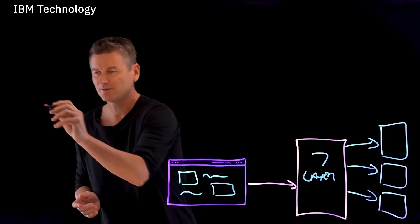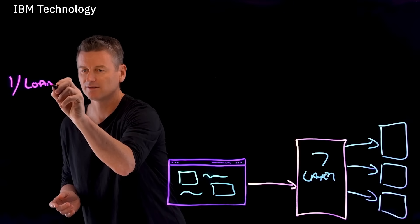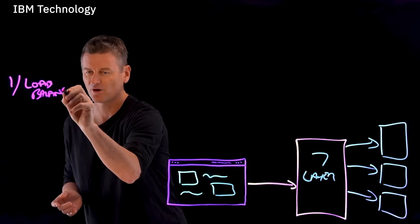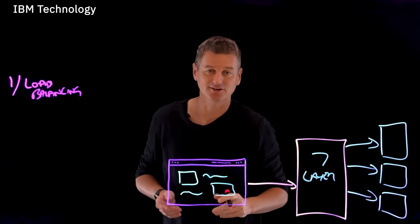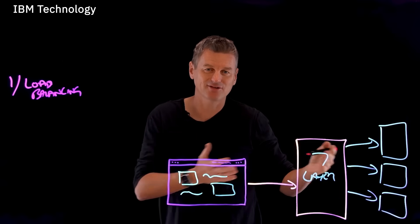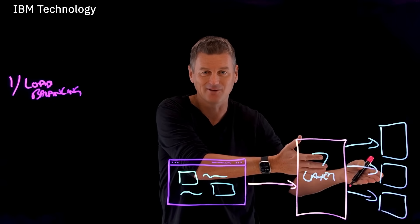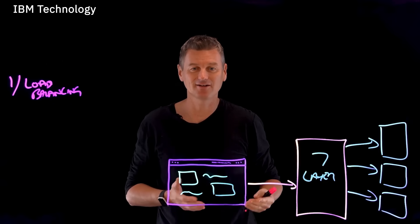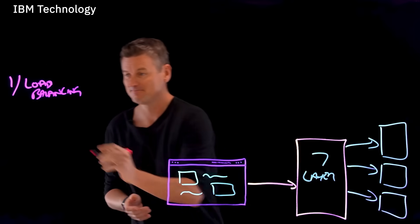The first advantage is load balancing, and I think it's the most obvious one. Because we can route the request to any number of servers, no longer constricted to the performance of a single server, we can send it to the one that is least busy.